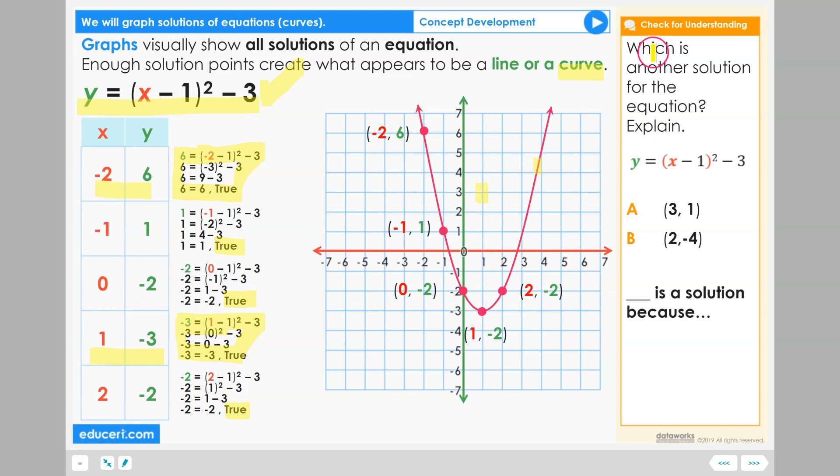Let's check for understanding. Which is another solution for the equation? Explain. Here is the same equation, so we can look at this same graph right here. And let's think about these two ordered pair locations.